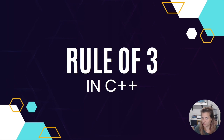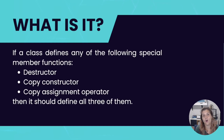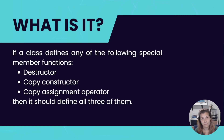But before we just jump into code, like always, let's look at the definition of the Rule of Three. The Rule of Three states that if a class defines any of the following special member functions — a destructor, a copy constructor, or a copy assignment operator — then it should define all three of them. Basically, the Rule of Three is a guideline or best practice for how you should write classes that manage external resources, such as dynamically allocated memory.